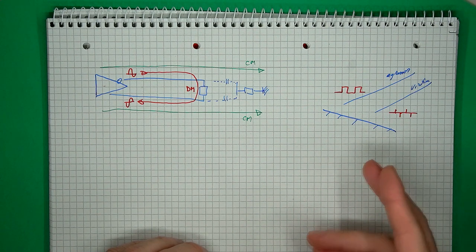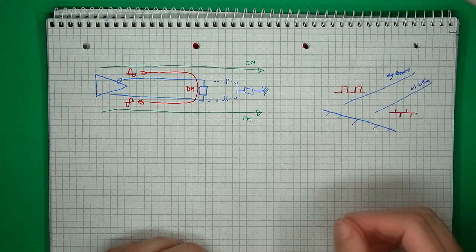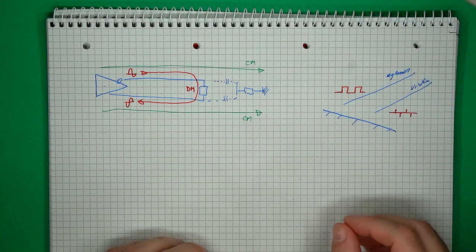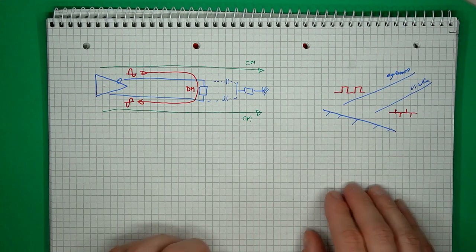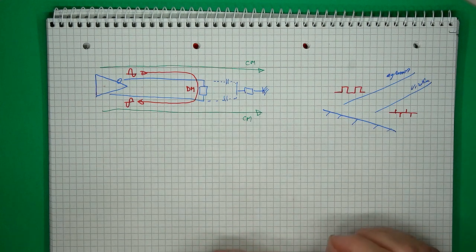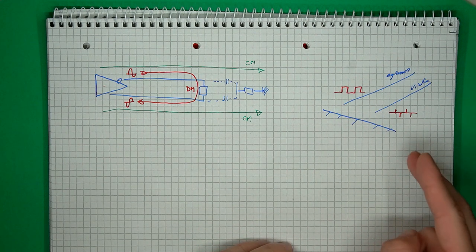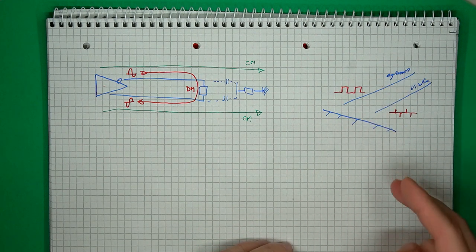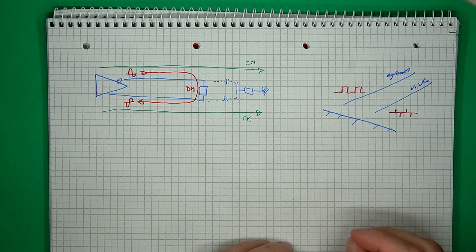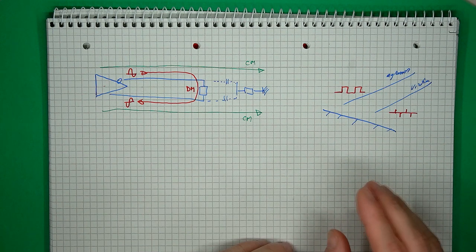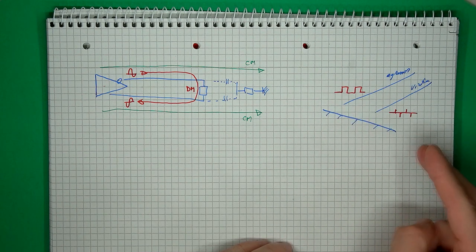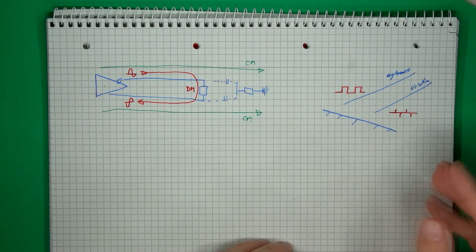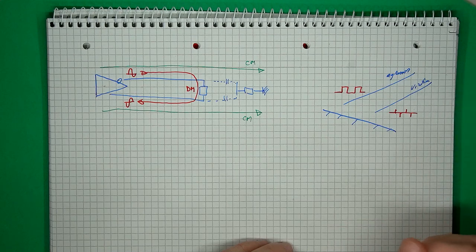The other important use case you might want to simulate is crosstalk — when you have a useful signal on one trace and you don't want to get that signal on the other. By carefully modeling the impedance from one trace to the other and from each trace to ground, you can observe exactly how much coupling will occur and how much signal will get induced into the second line.